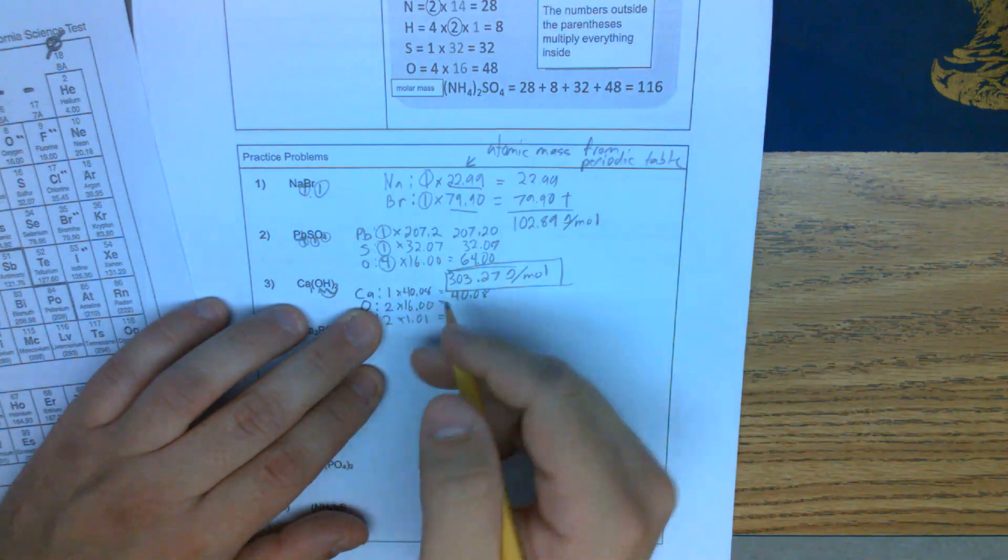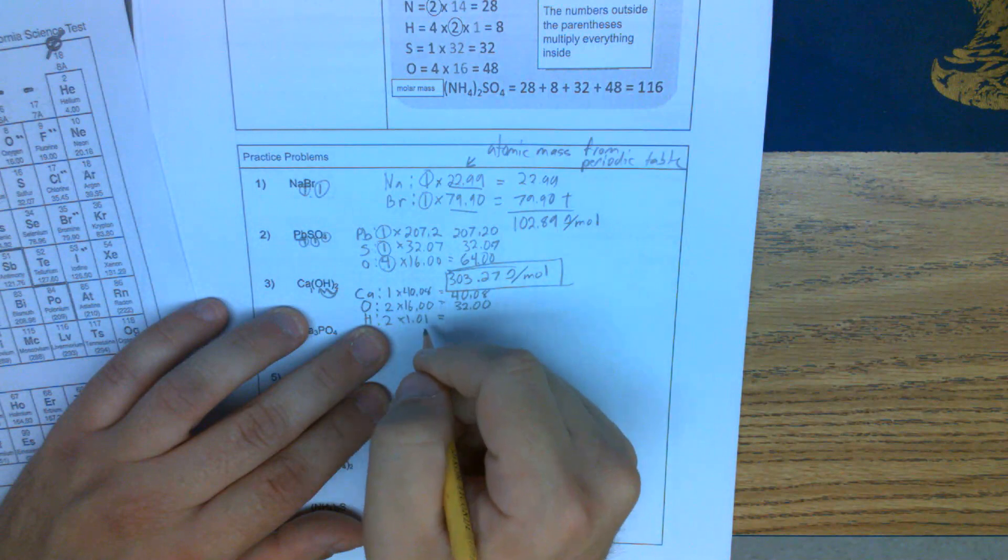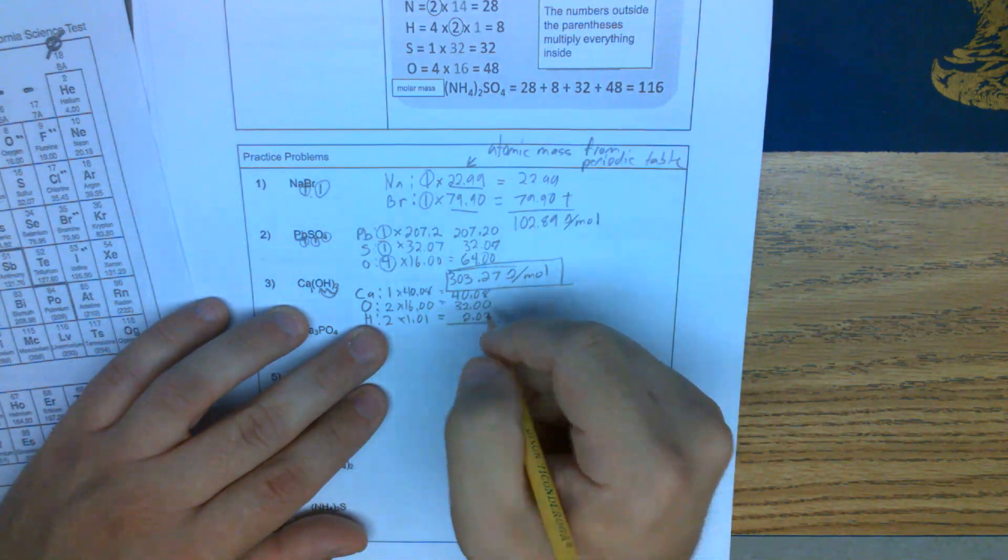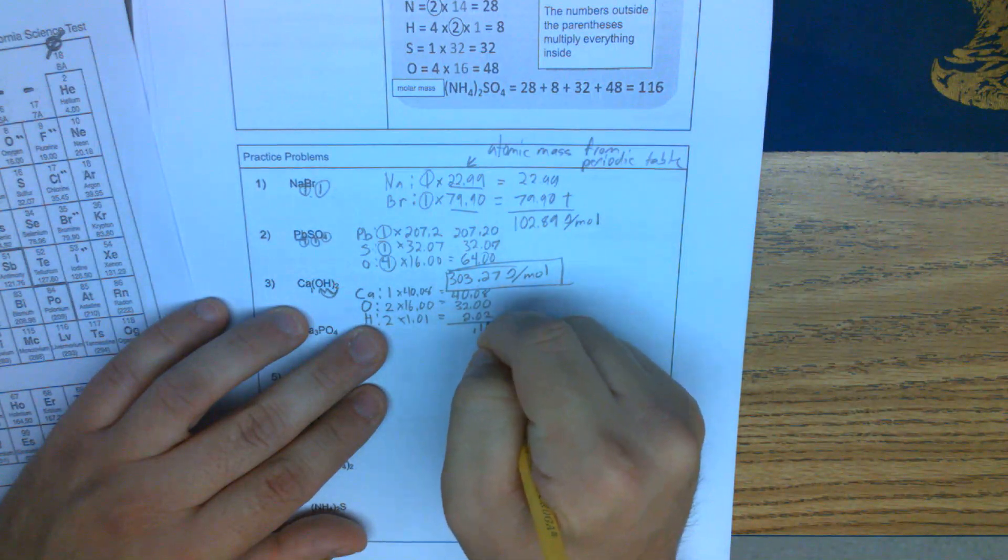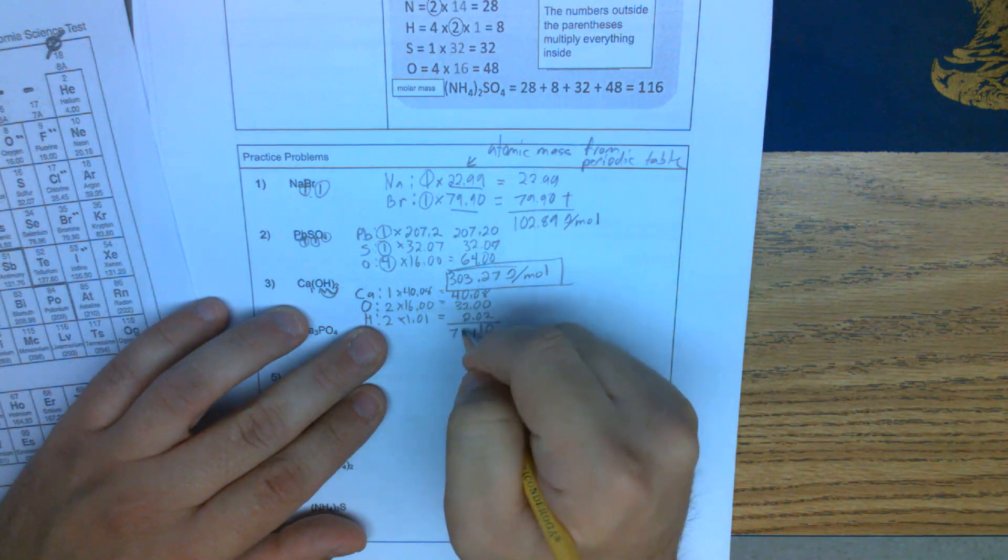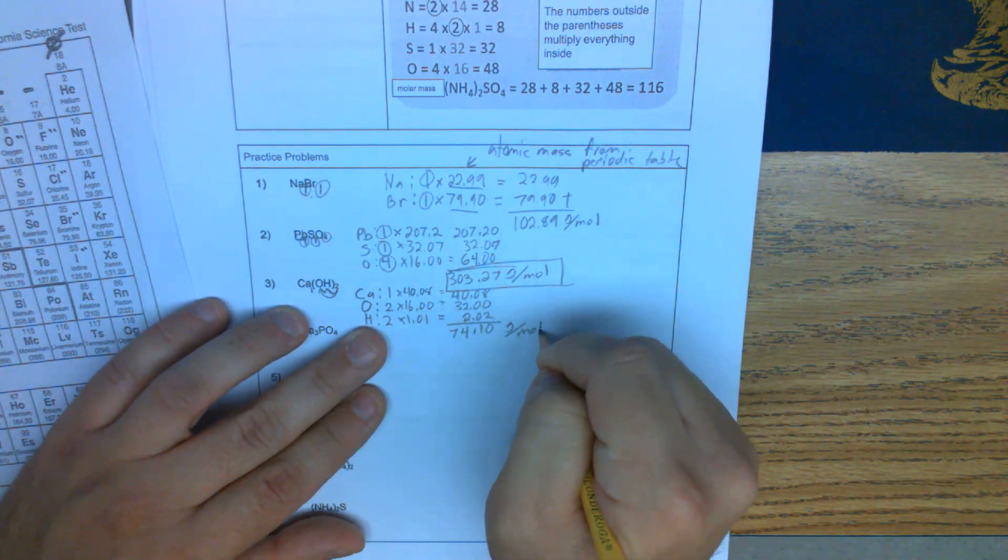We'll multiply this out. 2 times 16, we get 32. And 2 times 1.01, we get 2.02. If we add this up, this is 74.10 grams per mole.